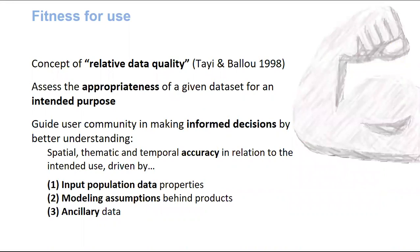The concept of fitness for use relates to so-called relative data quality, which basically means you're trying to assess the quality and appropriateness of a given dataset for an intended purpose — a big difference from a common data quality assessment. We try to provide guidance to the user community in making better-informed decisions by understanding different components of accuracy: spatial, thematic, and temporal, in relation to the intended use. This is driven by three components: input population data properties, the modeling assumptions behind those products, and the ancillary data being used to produce these gridded populations.